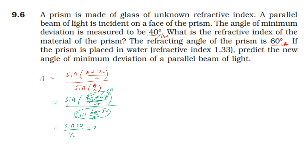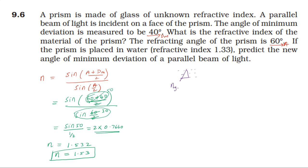Sin 30 value is 1 by 2, so this becomes 2 into sin 50. Sin 50 is 0.7660. So, 2 into 0.7660 is 1.532. This is the refractive index of the prism.